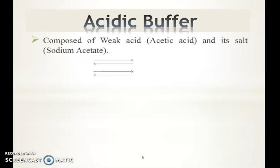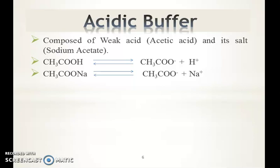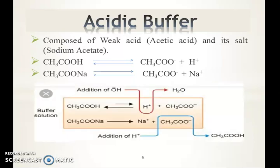Now we will discuss the mechanism of buffer — this is very important. Acidic buffer is composed of weak acid and its salt. The weak acid is acetic acid and its salt is sodium acetate, the strong conjugate base of acid. Acetic acid dissociates into CH3COO⁻ (the acetate ion) and the hydrogen ion, and this weak acid is not completely dissociated. The strong conjugate base (salt) is completely dissociated.